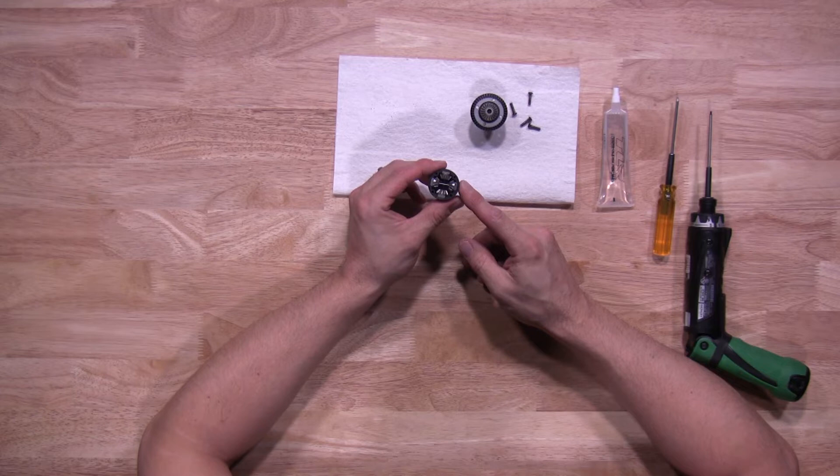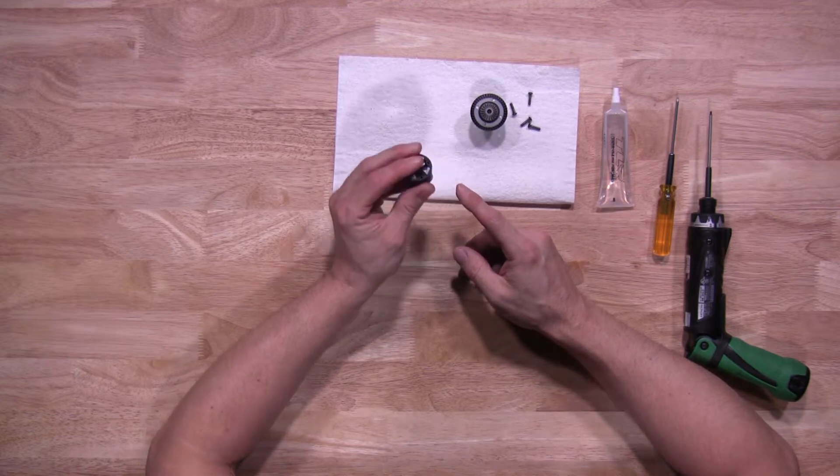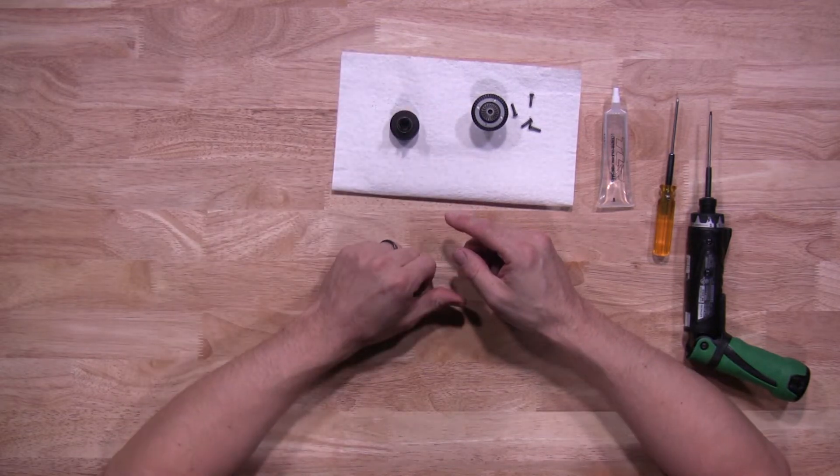Next we have two different options. If the diff fluid is low and you're just looking to top everything off, you add the same weight oil. Or if you're looking to replace the oil, this is where the rag comes in handy. You just take the diff, flip it upside down on the rag itself. It'll all drain out.